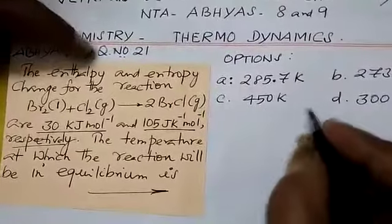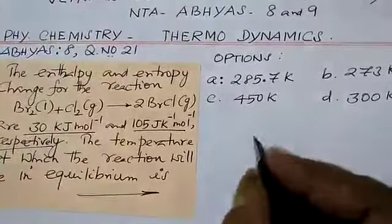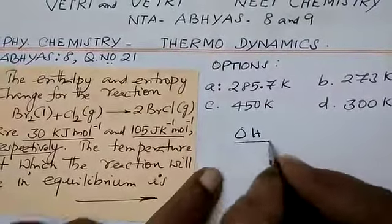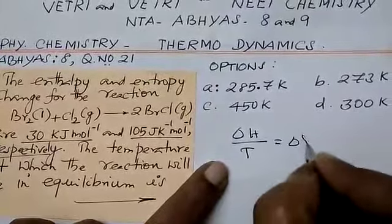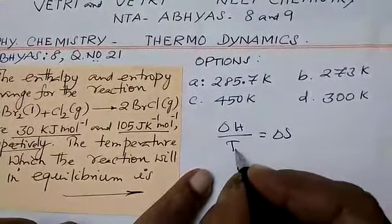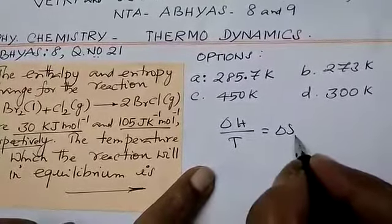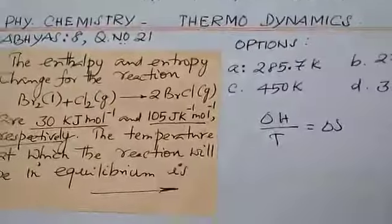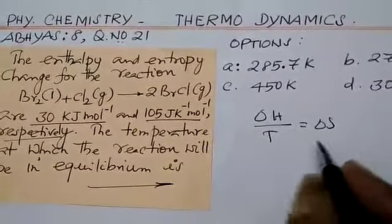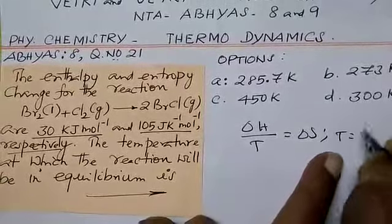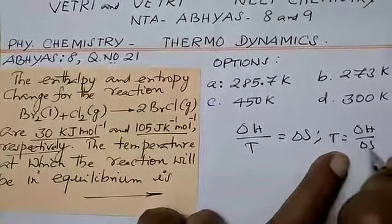Let us write the enthalpy and entropy relationship. ΔH/T = ΔS. Change in enthalpy divided by temperature equals change in entropy. This is the formation of entropy relationship. They ask us to calculate temperature, so T = ΔH/ΔS.